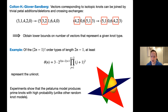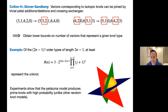Petal permutations and the petaluma model give us a model where we have a good grasp on the geometry of the space and can understand the distribution of knots better than in models like random braids.